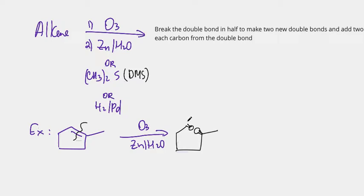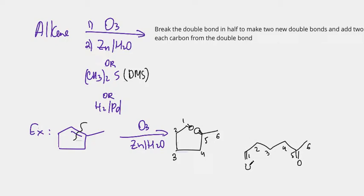I'm going to number my molecule: one, two, three, four, five, and six, and redraw it more beautifully. Numbering is always a really good idea. My carbon five has a double bond O, and my carbon one has a double bond O. So again, all we did is found C double bond C, broke it in half, and put oxygen on each side of the double bond to make two new double bonds, then redrew it in a nicer way since it's no longer a ring.